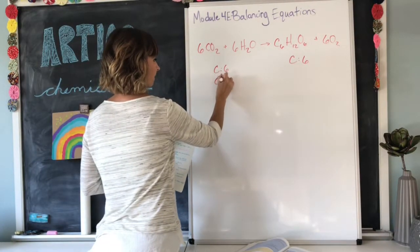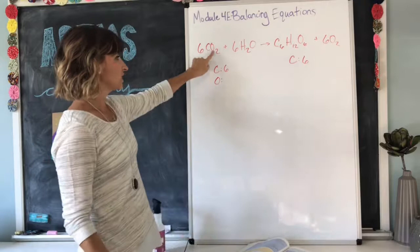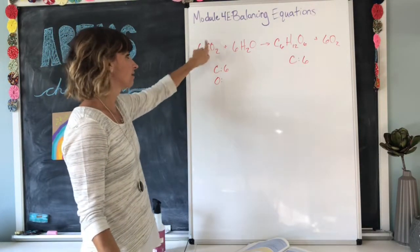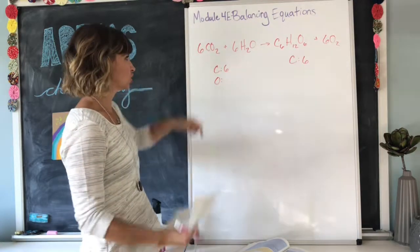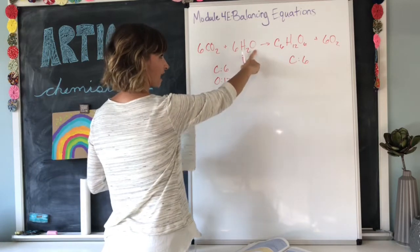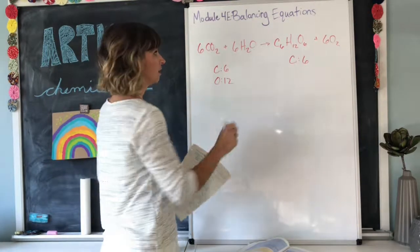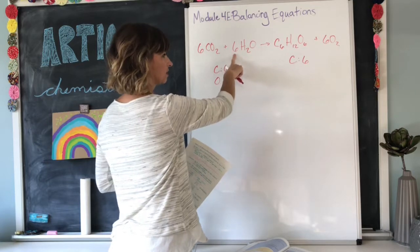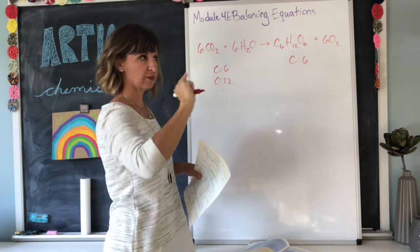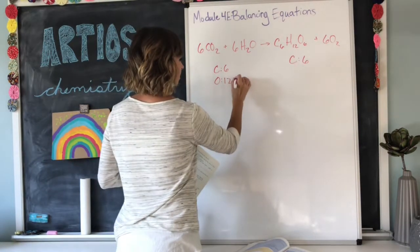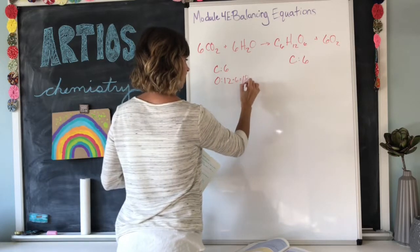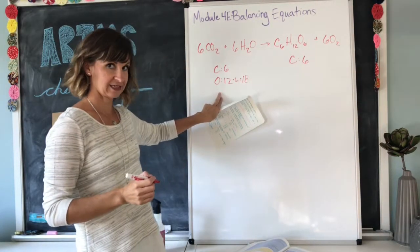Next up is oxygen. Oxygen is present in CO2 with two atoms, and there are six of these molecules total. So, six times two is 12. So, we have 12 oxygens here, but we also have oxygens in the water molecule. There are six water molecules. Each molecule has one oxygen. So, six times one is six. So, we have 12 from here plus six from the water molecules equals 18 oxygens on the reactant side.